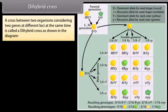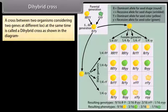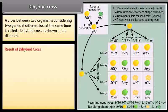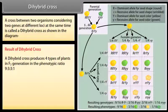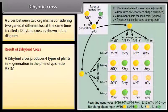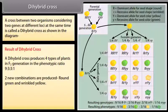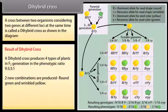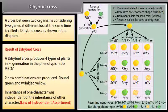Dihybrid cross. A cross between two organisms considering two genes at different loci at the same time is called a dihybrid cross as shown in the diagram. Result of dihybrid cross: A dihybrid cross produces four types of plants in F2 generation in the phenotypic ratio 9 is to 3 is to 3 is to 1. Two new combinations are produced: round green and wrinkled yellow. Inheritance of one character was independent of the inheritance of other character.